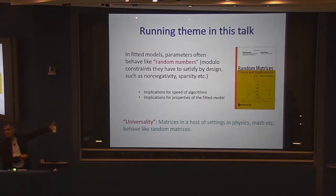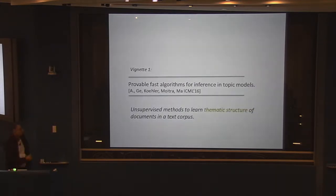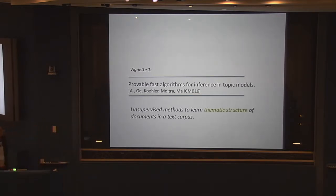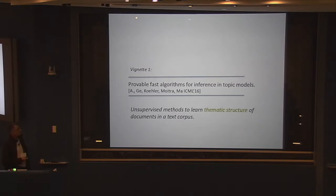All we'll do is observe that in practice the model parameters behave like random numbers and see what we can derive from that. Vignette one: provable and fast algorithms for inference in topic models. This is work appearing at ICML in New York next month, with Ranga, Frederick Kohler — a Princeton undergrad — Ankur Moitra, and Teng Yuma.